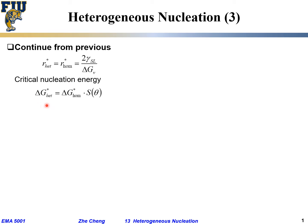The critical nucleation energy for heterogeneous nucleation equals that for homogeneous nucleation times f(θ) — a geometric factor describing the ratio of the sphere cap volume for heterogeneous nucleation to the whole sphere for homogeneous nucleation. This f(θ) term is always less than or equal to one.